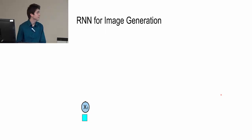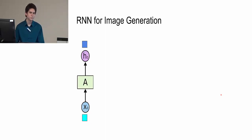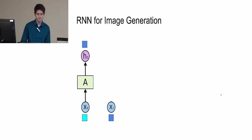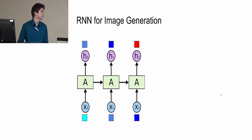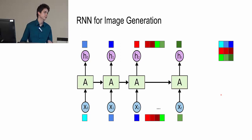So how does an RNN generate an image? First we sample the first pixel and send it through the RNN, which generates a hidden state. From the hidden state we add a softmax layer of 256 units, and then it predicts pixel 2. We send pixel 2 back through the RNN to generate pixel 3, and keep doing this until we've generated the entire image, then reshape those pixels to make up the image.